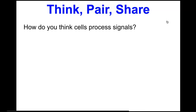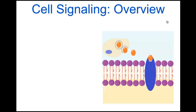Hello AP Biology students, and welcome to Unit 4 lecture topics 1 through 4, part B. This will typically be a think-pair-share, but think about how cells process signals. In the last lecture part A, we discussed how cells do signaling, and now we're going to look at how cells actually process those signals they receive from other cells.